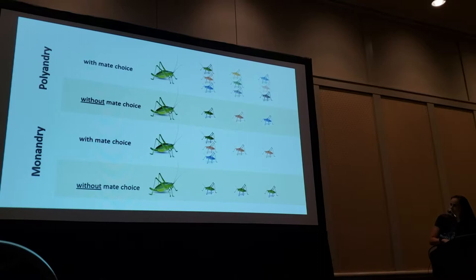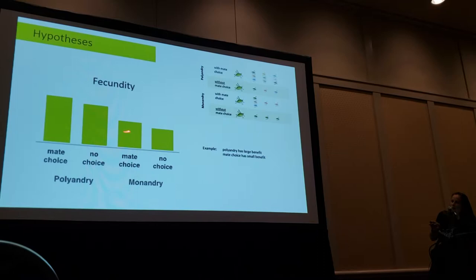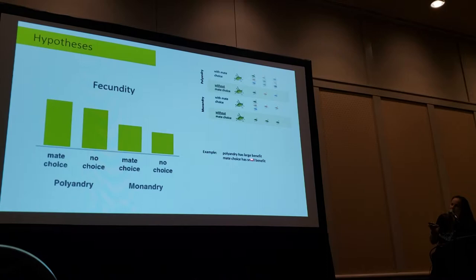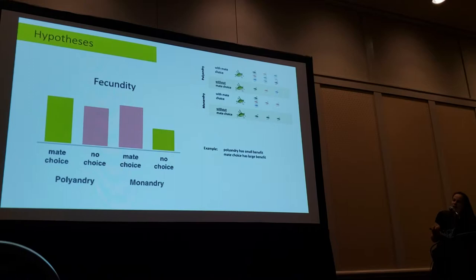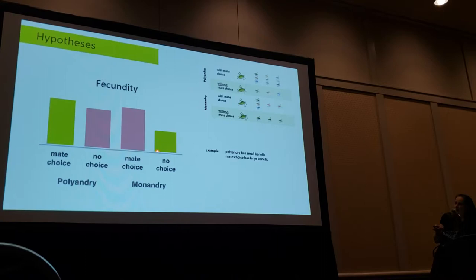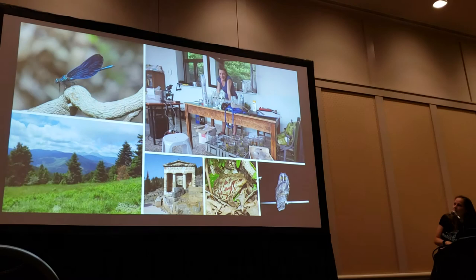What we expected was something like these hypothetical scenarios. If polyandry was beneficial to the female in the short run, we would expect an increase in fecundity compared to the monandrous treatment. Mate choice might have a smaller benefit than polyandry, but we would still see an increase in fecundity in the mate choice treatment. Alternatively, if mate choice had a bigger benefit than polyandry, we would see a stronger fecundity spike in the monandrous mate choice treatment than in the no-choice treatment.